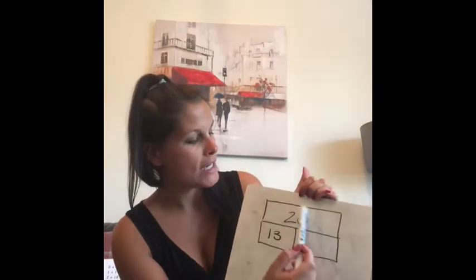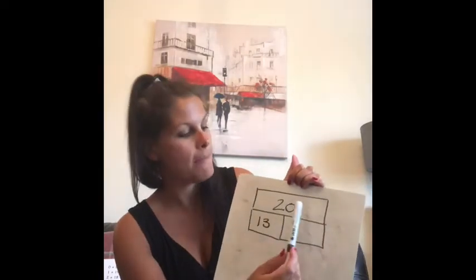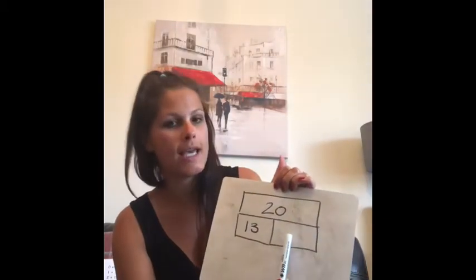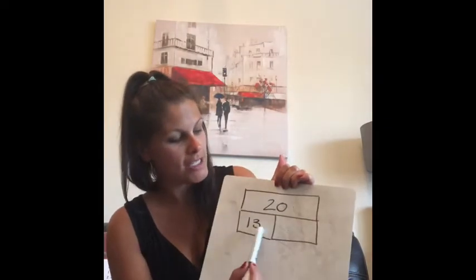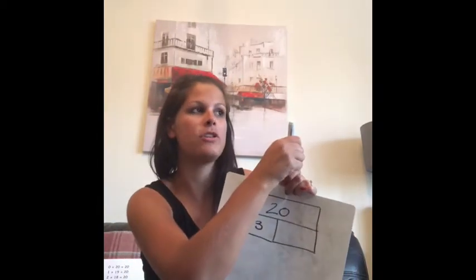So here in my bar model, I've got 20 as the whole number and I've got two parts here that make up 20. And we're going to find the missing number that goes here in the space. So I know 20 take away 13 is something and we're using our number bonds of 20 to help us today.